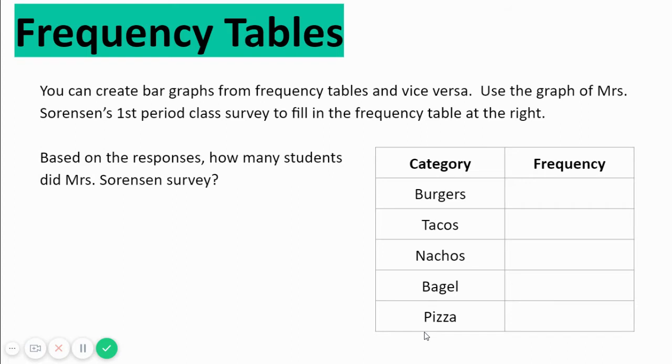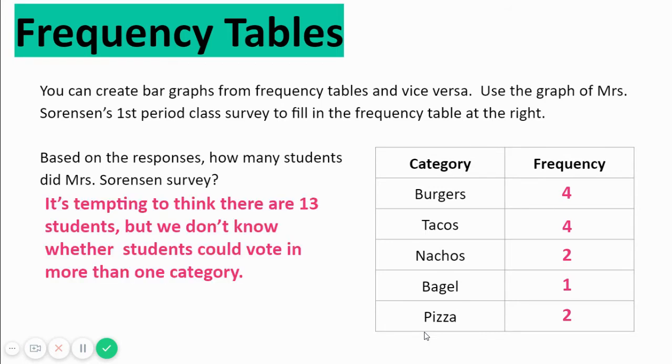Frequency tables, one of my favorite things. A frequency table gives you a count of how many responses you get for each category. How many students did Ms. Sorenson survey? We have no idea. And the reason we have no idea is it doesn't tell us whether people could vote for more than one category.